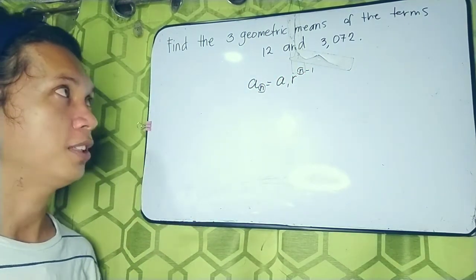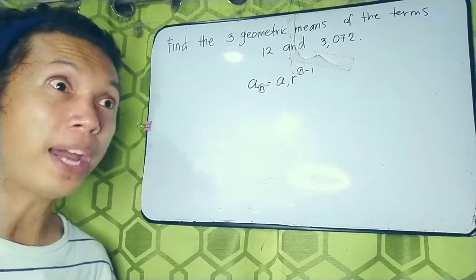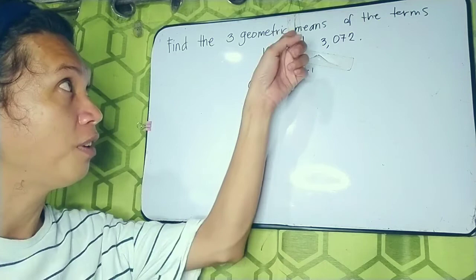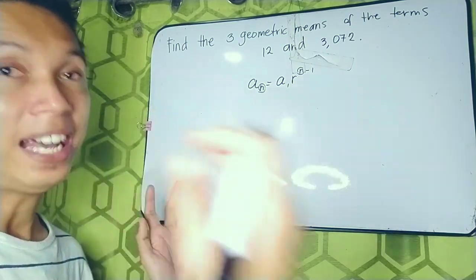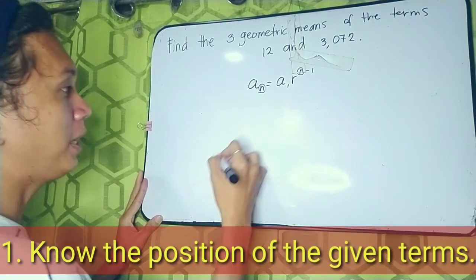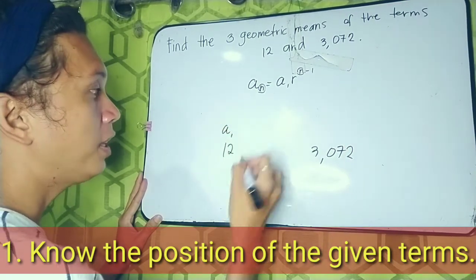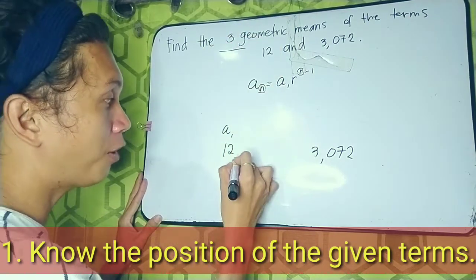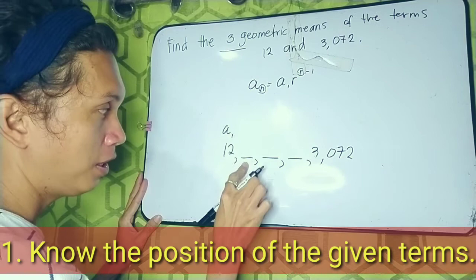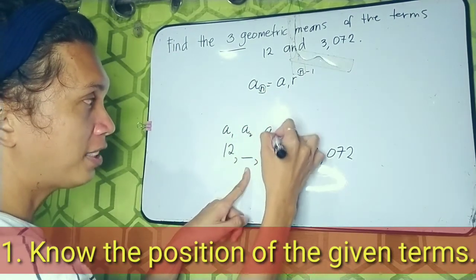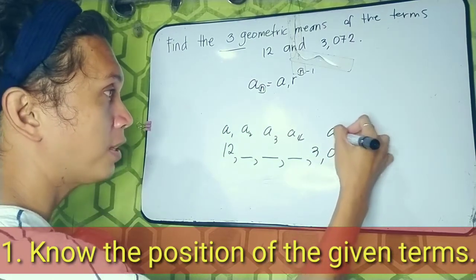Going back to the question, we are looking for the three geometric means. Recall that the means are the terms between the first and the last term. So our first term is 12 and our last term is 3072 — this is our a sub 1. Since there are three geometric means, there are three missing terms in between: the first missing term is a sub 2, next is a sub 3, next is a sub 4, and 3072 is our a sub 5.